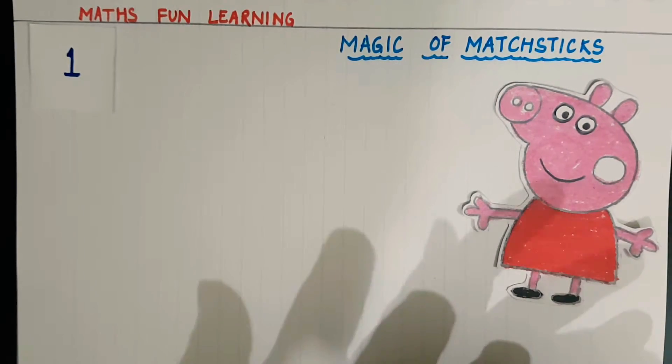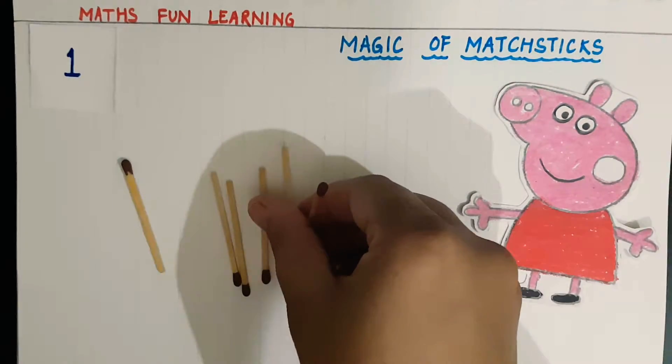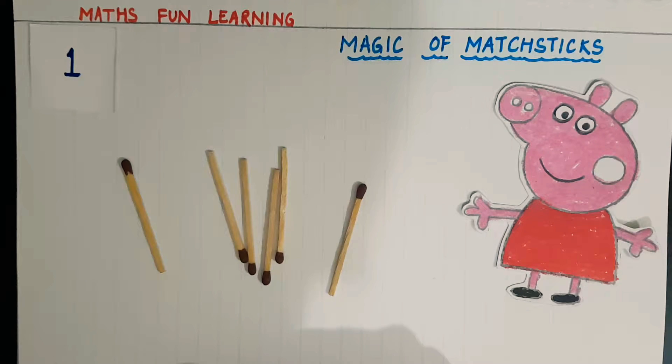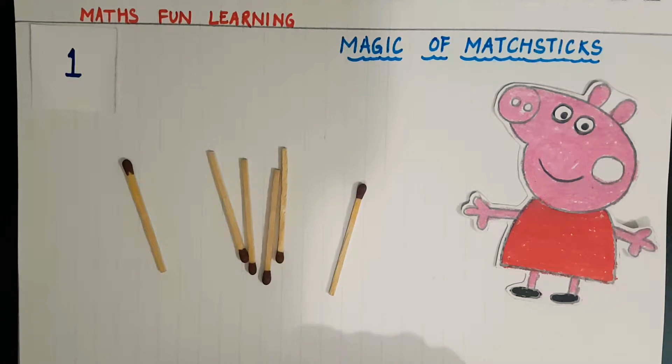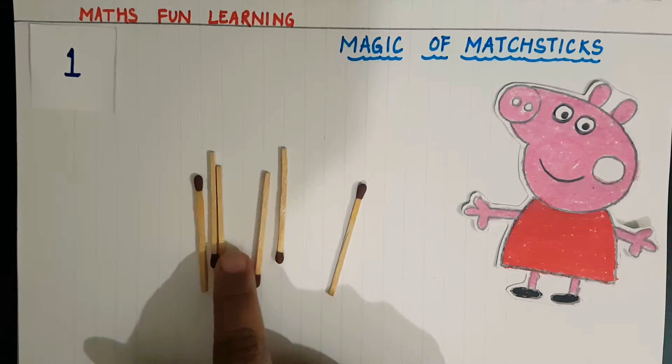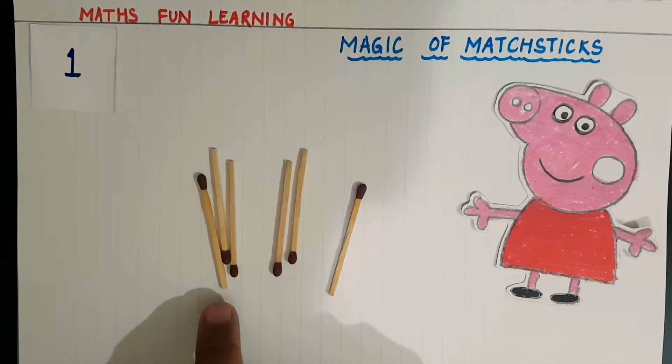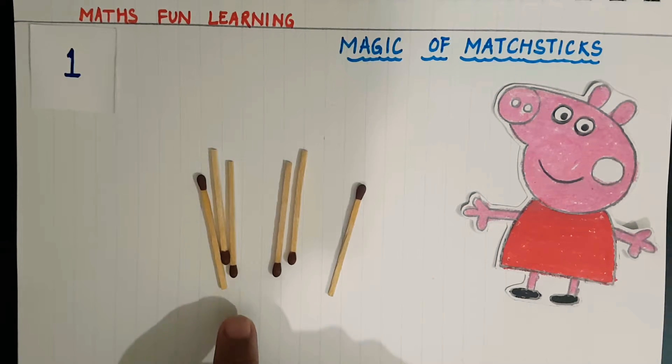Go and bring, okay. So I have six matchsticks. With these matchsticks, I have to form a figure with five squares. So kids, are you ready to make five squares with the help of six matchsticks? Okay, let's start.